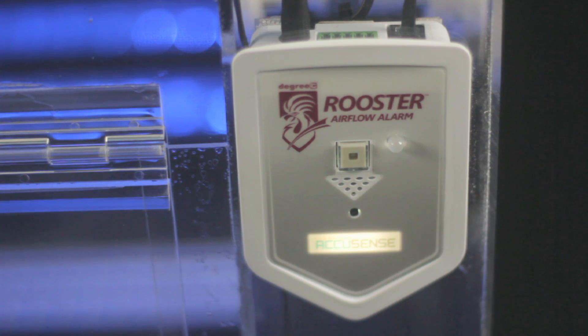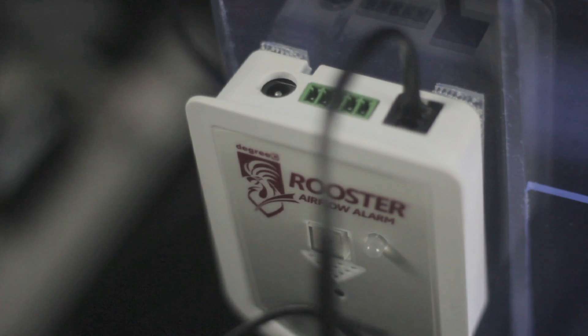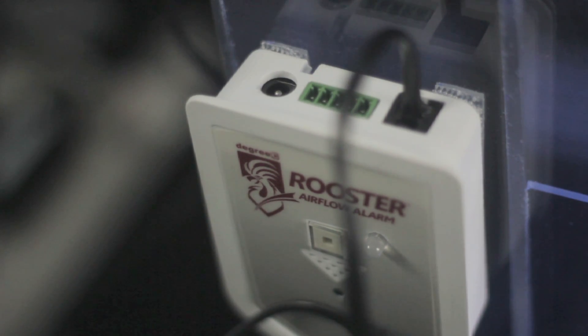Once plugged in, the Rooster is on. There is no power switch. The Rooster also comes with a Phoenix terminal strip for direct connection to the cabinet's 12 volt DC power supply.